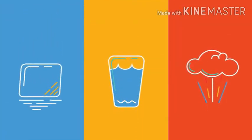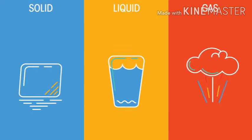On Earth, materials exist in one of three main states of matter – solid, liquid or gas. Materials can change between these states.